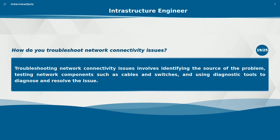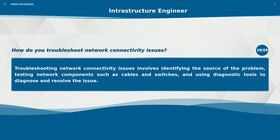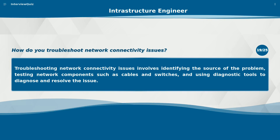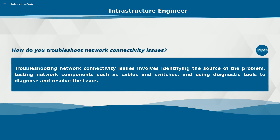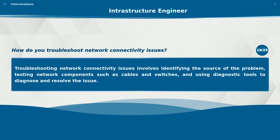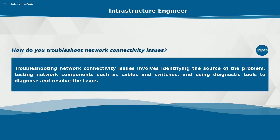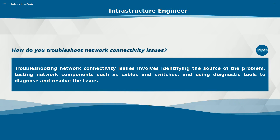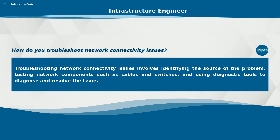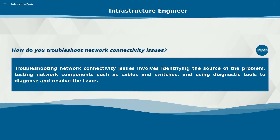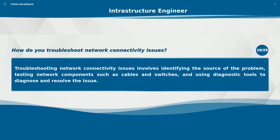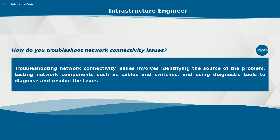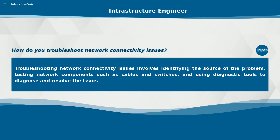How do you troubleshoot network connectivity issues? Troubleshooting network connectivity issues involves identifying the source of the problem, testing network components such as cables and switches, and using diagnostic tools to diagnose and resolve the issue.